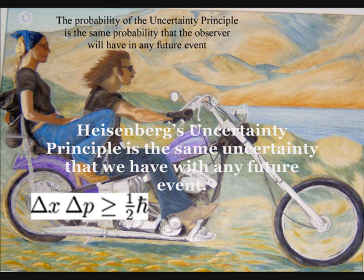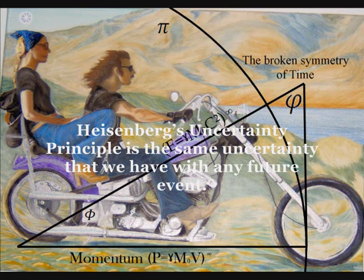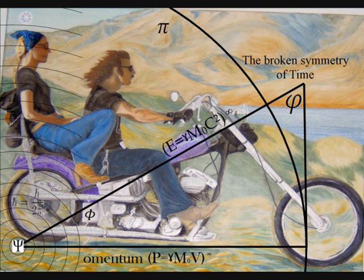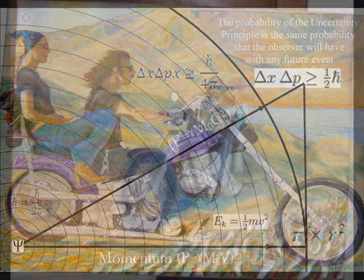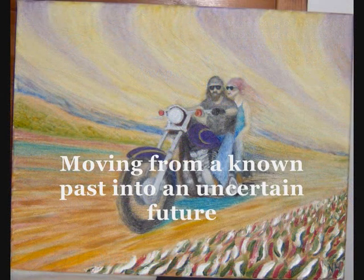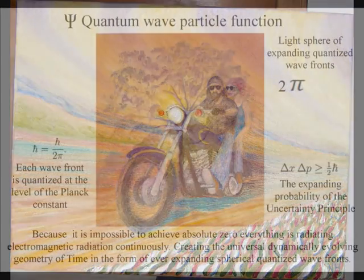The second idea is that Heisenberg's uncertainty principle is the same uncertainty that we have with any future event. From these two simple ideas, quantum mechanics can be explained in a way that exactly fits in with our everyday experience of nature and time, moving from a known past into an uncertain future.